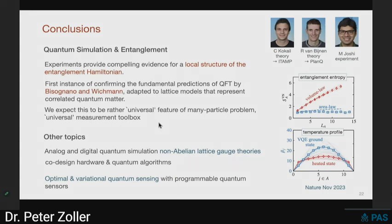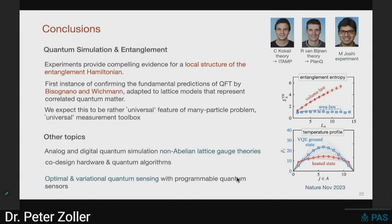In conclusion, we as theorists are pretty excited about being able to use these quantum machines that seem to do what we expect them to do, and now seeing new physics hopefully also in a regime that's classically no longer accessible with computers. All of these things should be valid in higher dimensions, and can be applied to different models and different platforms. It will be very interesting to see to what extent this local structure of the entanglement Hamiltonian is universally valid in other contexts. What I've not talked about is work on analog and digital quantum simulation for non-Abelian lattice gauge theories, and also ideas that translate to optimal and variational quantum sensing using these programmable quantum simulators running them as sensors to define optimal sensing protocols.